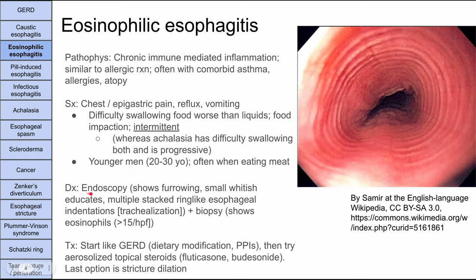Diagnosis is made by endoscopy, where you'll see furrowing, whitish exudates, and multiple stacked ring-like esophageal indentations — this is called trachealization of the esophagus, because normally the esophagus is smooth while the trachea has rings. Biopsy will show eosinophils, hence the name eosinophilic esophagitis. Treatment starts like GERD with dietary modifications and PPIs. You can also try aerosolized topical steroids like fluticasone or budesonide. The last option is to dilate strictures if they become severe.